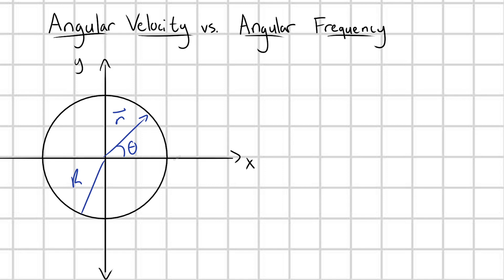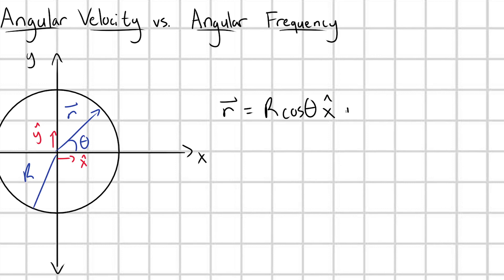Now if I define some unit vectors, here's my x hat direction, here is my y hat direction just like this, then what would my position vector r be? It would simply be equal to r times cosine theta in the x hat direction, plus r times sine theta in the y hat direction. Super simple.